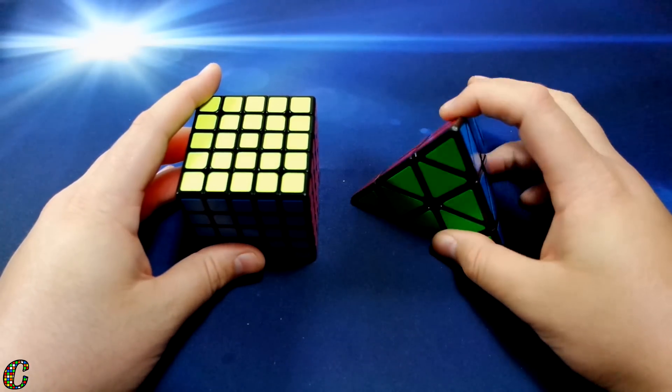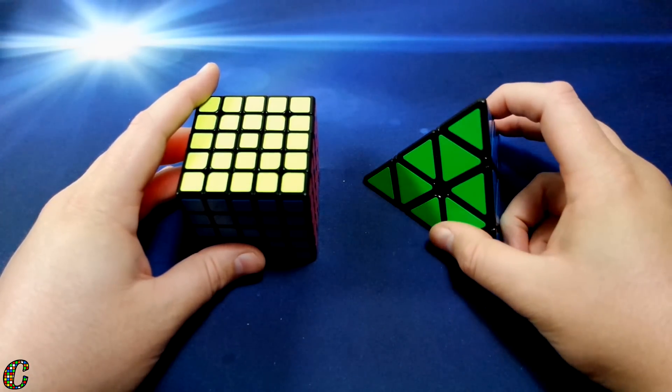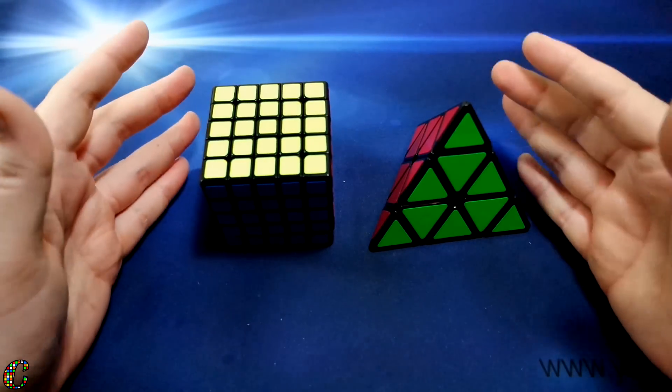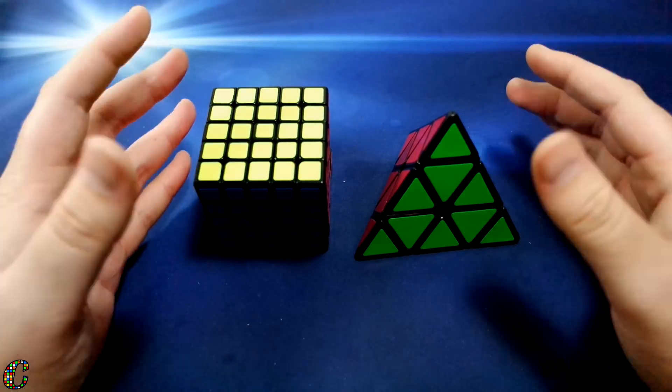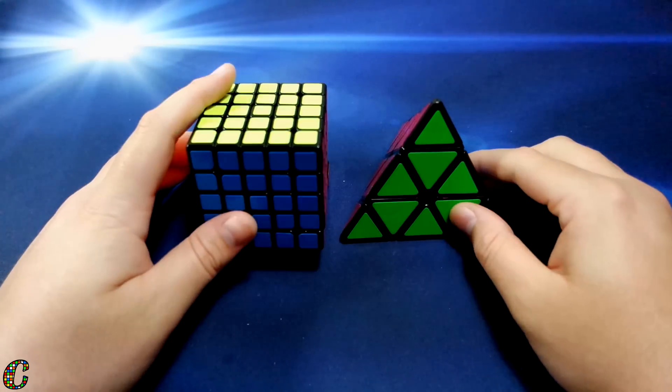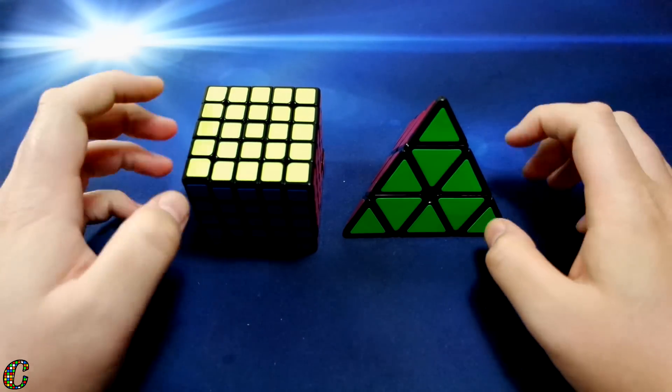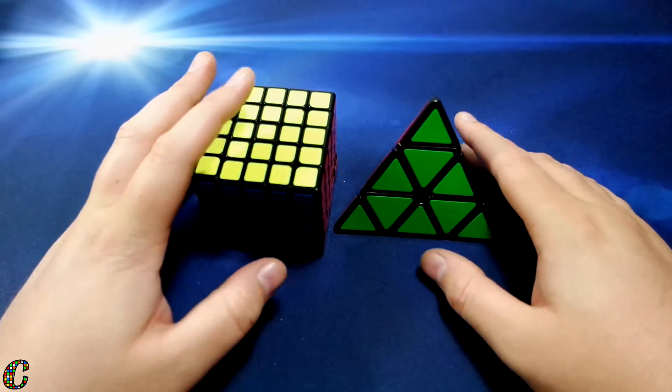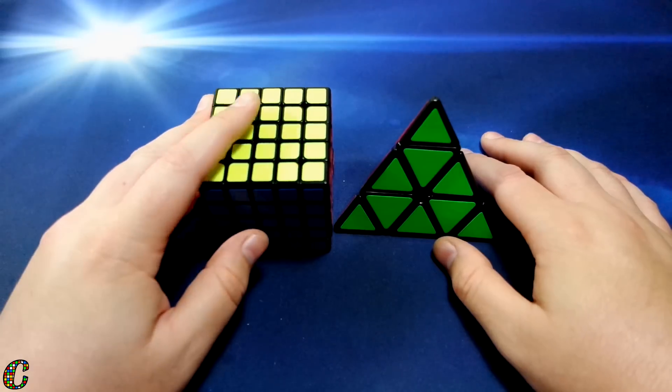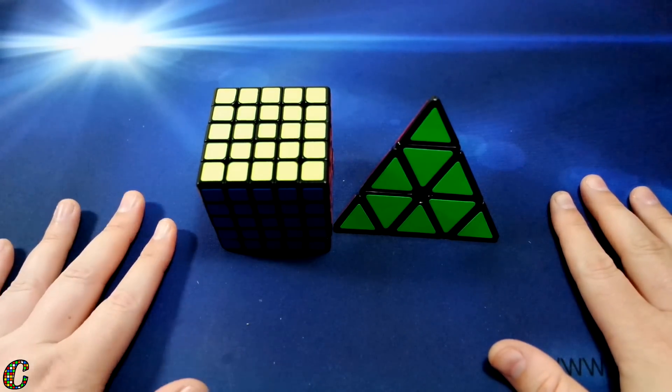So definitely go check these out on thecubicle.us. The Chi Yi Pyraminx is only $13 and the new Yuxin 5x5 is only $17, which puts them pretty much on the level of economy cubes and they perform like high-end. So I really appreciate you guys watching, give this a thumbs up if you enjoyed. If you didn't enjoy, just watch it again, maybe you'll like it better the second time, who knows. So like I said before, thanks again for watching and you'll hear from me really soon guys. Talk to you later, bye!